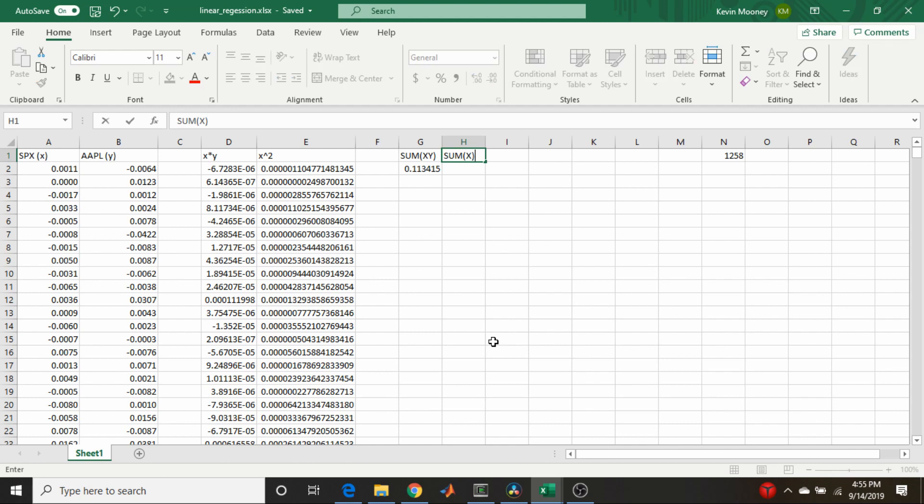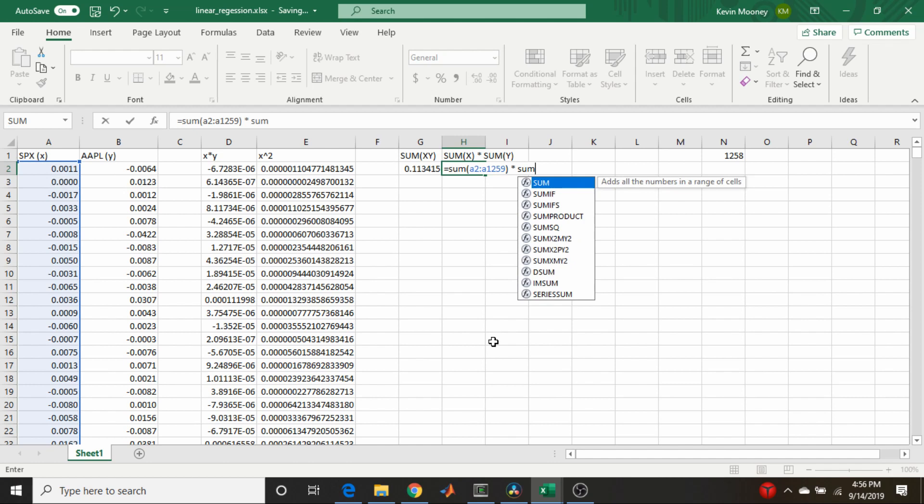Now we're going to need the sum of the x values times the sum of the y values. So let's just call this sum x times sum y. And this is going to be equal to sum of the a column. So it's a2 to a1259. And it's going to be times sum b2 to b1259.